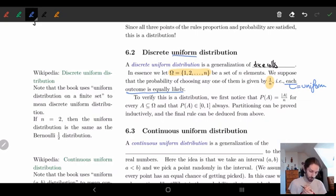Note that in the book, this is called a uniform distribution on a finite set. This is old terminology. Most people now will say discrete uniform distribution. So I'd rather use modern language for this.